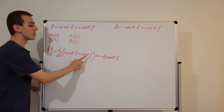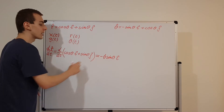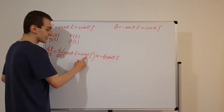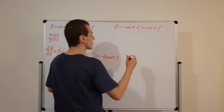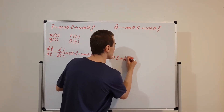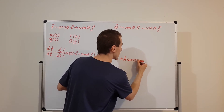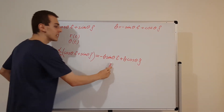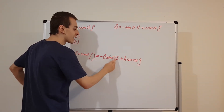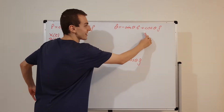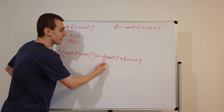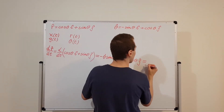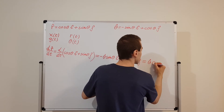For the vertical component, j hat goes along for the ride. Sine theta differentiates to cosine theta, and we multiply by theta dot from the chain rule, giving theta dot times cosine theta times j hat. We now have minus theta dot sine theta i hat plus theta dot cosine theta j hat. Factoring out theta dot gives us theta dot times theta hat, so d/dt of r hat equals theta dot times theta hat.